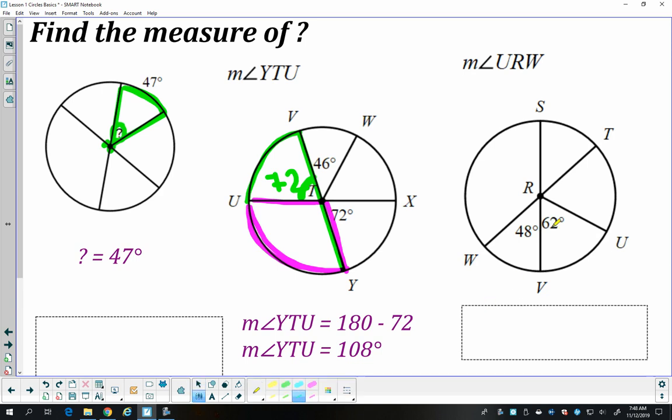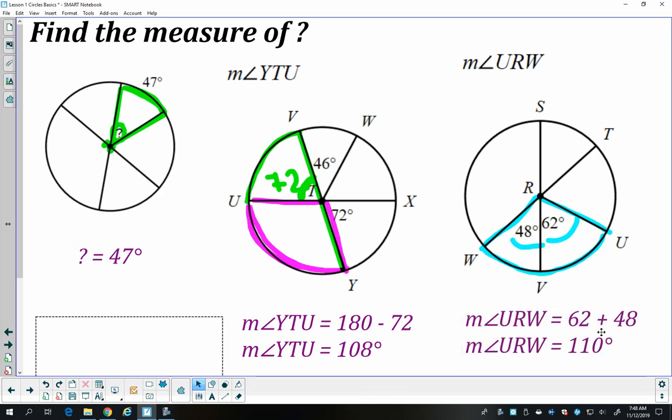And last, URW. This arc right here is formed by these two angles, 62 and 48. So we just got to add those two together, and it'll tell us that the arc is 110 degrees.